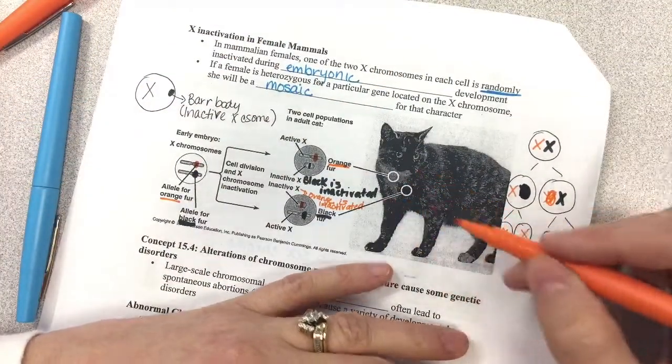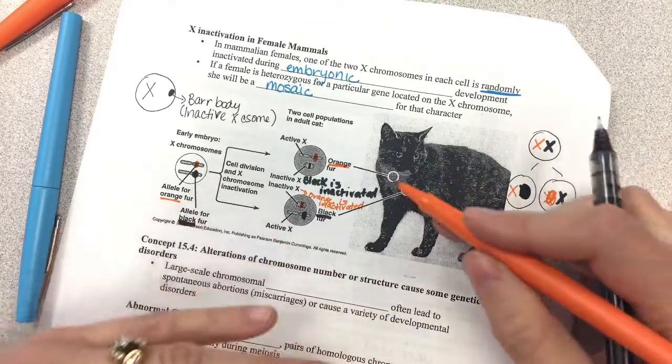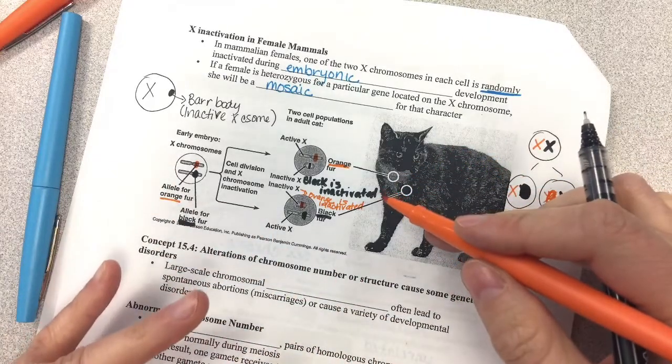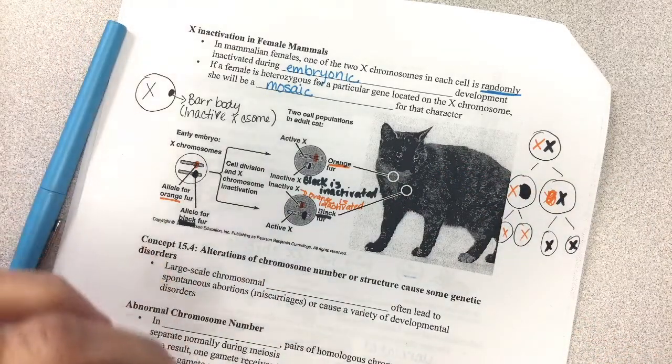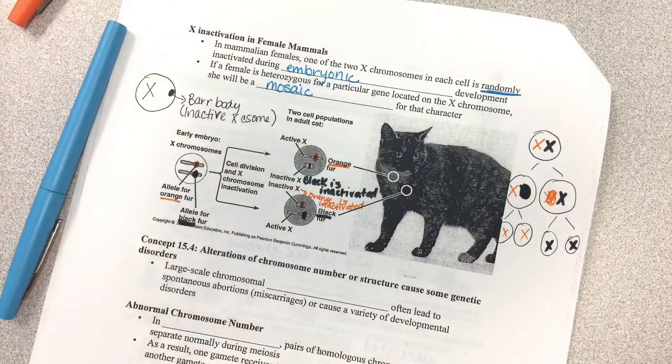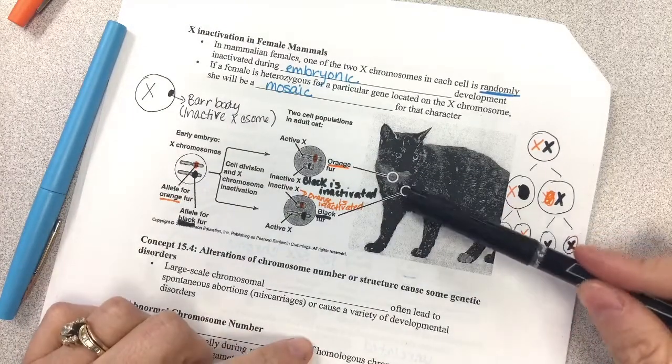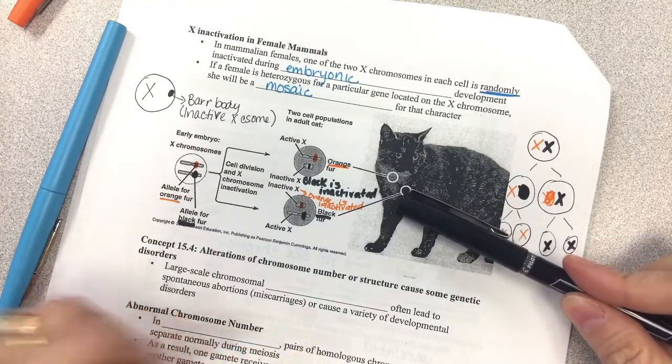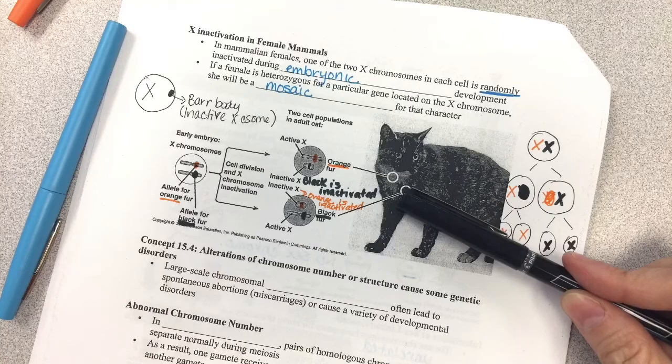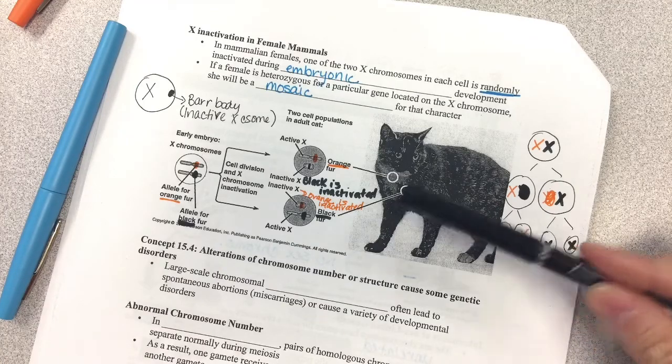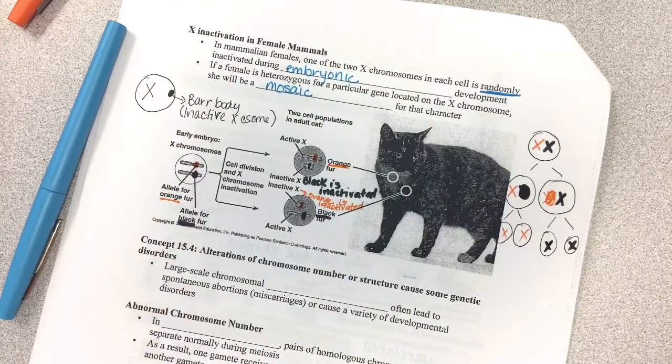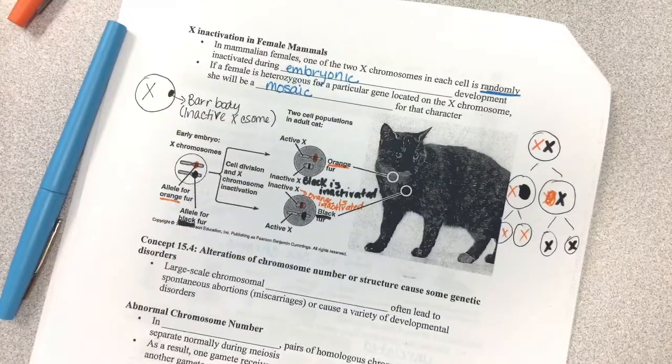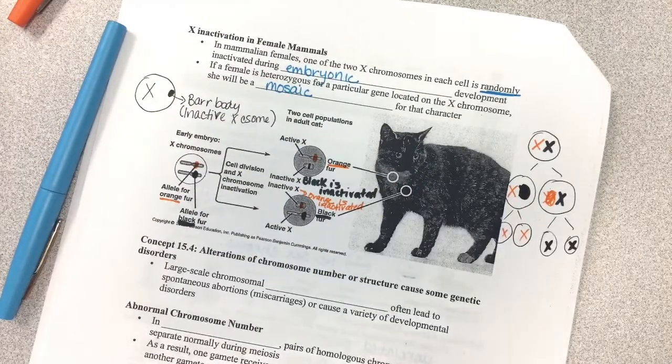And so therefore, for this cat, this cat will have fur that in some places is orange and some places is black, and that is because the X chromosome - it depends upon in that particular part of the cat which one became inactivated. And so you get the splotchiness of black and orange because of the inactivation.